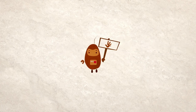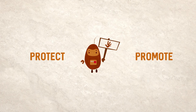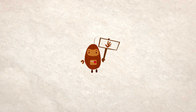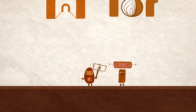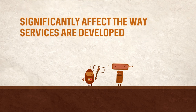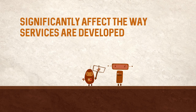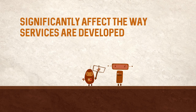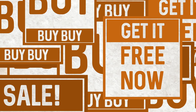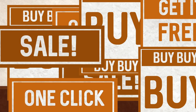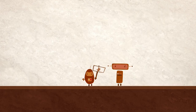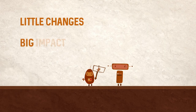As a human rights defender, there are many ways that you can protect and promote human rights in cyber policy at the grassroots level. You can, for example, encourage users to protect their privacy with tools like VPNs or anonymity networks. Individual behavioural changes like this can significantly affect the way services are developed. Think of ad blockers, for example — the increased use of these apps has affected the way publishers use advertising, in some cases by removing more invasive or annoying ads. Little changes like this can have a big impact.